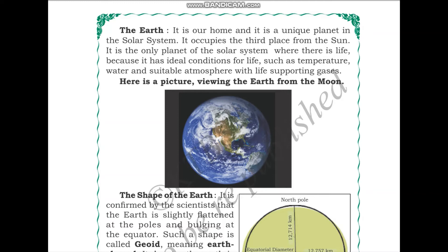The Earth is our home and a unique planet in the solar system. It occupies the third place from the Sun. It is the only planet where there is life, because it has ideal conditions such as appropriate temperature, water, and a suitable atmosphere with life-supporting gases. If it is too hot or too cold, we cannot survive, and we need water to survive.